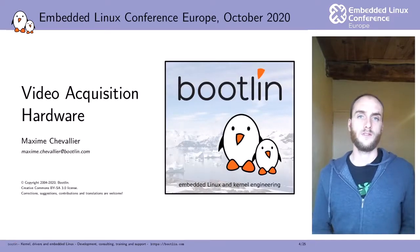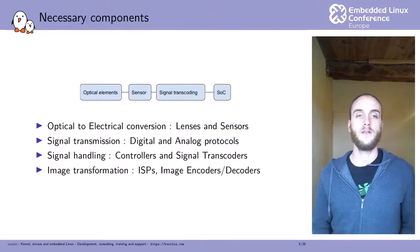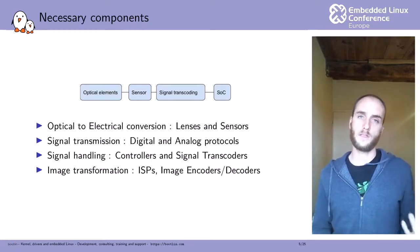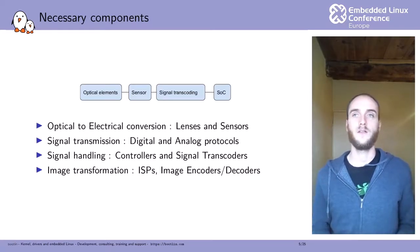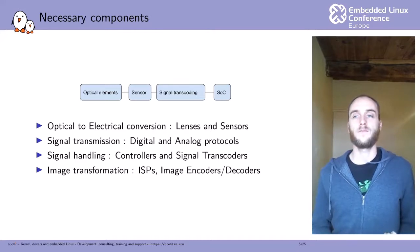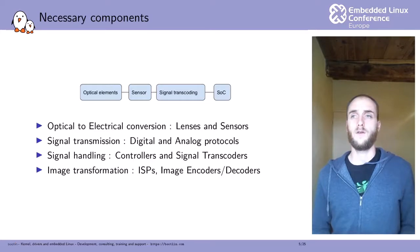To acquire an image, you need what we call a sensor. The sensor acquires the image and transforms an optical signal into an electrical signal. Before the sensor, you have optical elements that focus the incoming light, filter it, and alter it in some ways. After the sensor, you have components dedicated to transcoding the signal from what the sensor outputs into something your system-on-chip can understand. Sometimes you don't need this transcoding layer, but in some cases you will need an intermediary component.